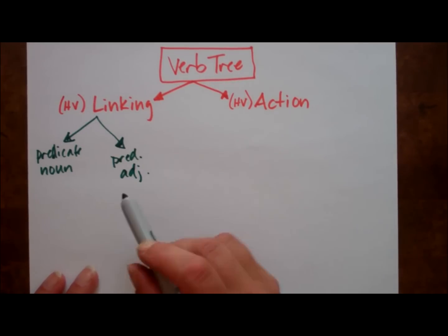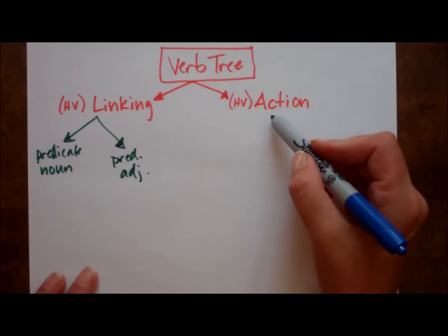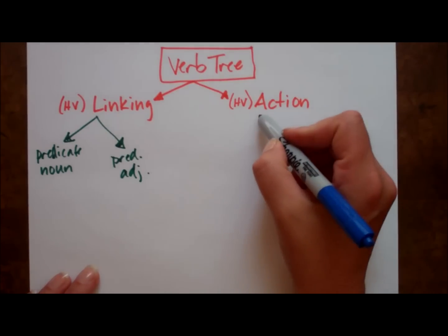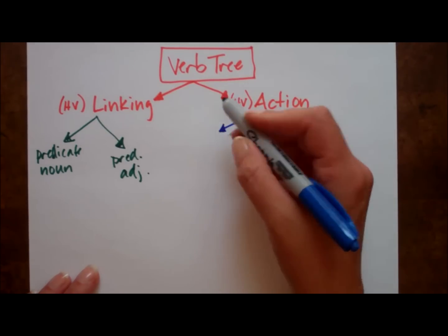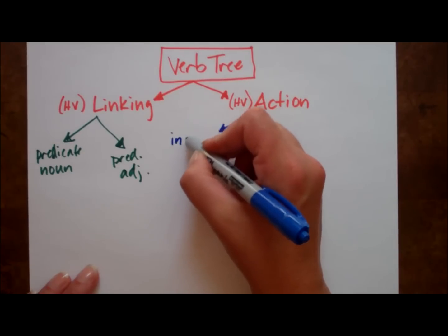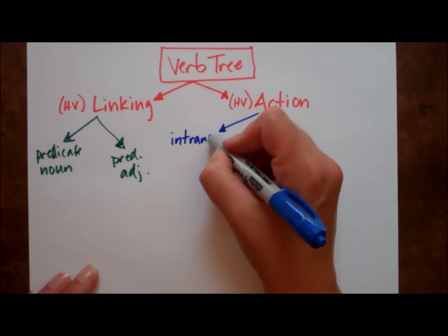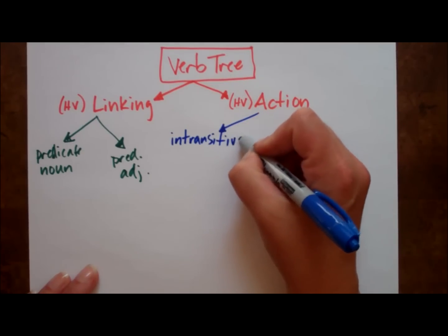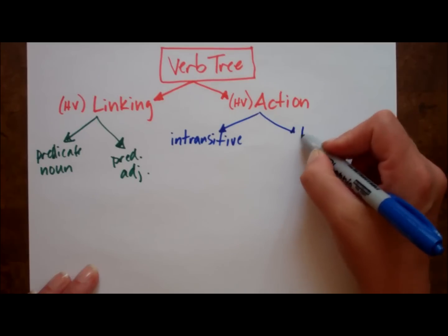On the other side, there are a few more limbs. Let's take a look. You start with an action verb. It can be either intransitive, or transitive.